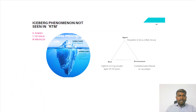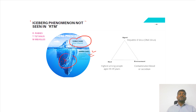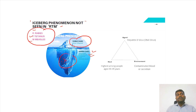Now let's talk about the iceberg phenomenon. In the iceberg phenomenon, remember, visible cases are actually diagnosed by the clinicians, whereas the hidden cases are going to be asymptomatic ones, pre-symptomatic, or undiagnosed patients. For the iceberg phenomenon, the mnemonic is RTM: R for rabies, T for tetanus, and M for measles. These are the diseases which do not follow the iceberg phenomenon.